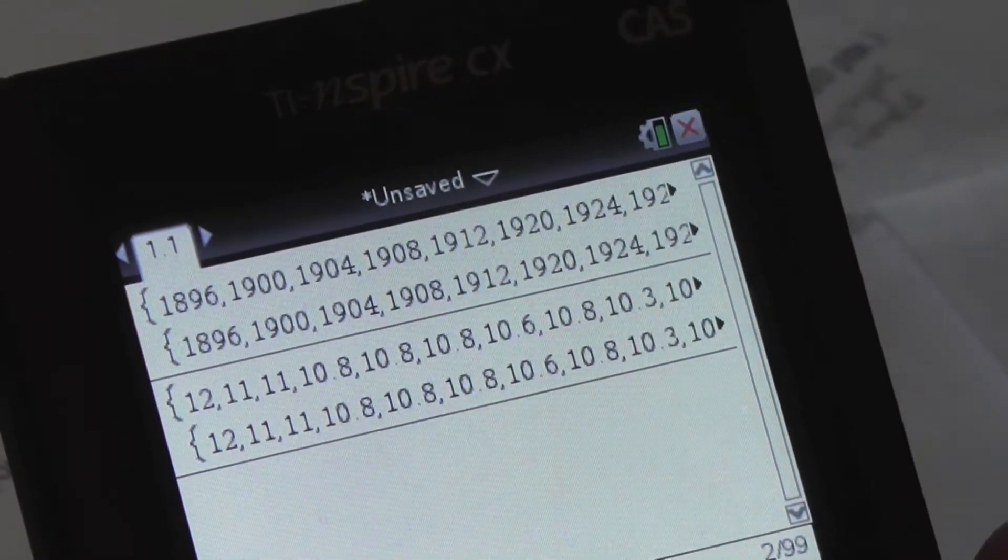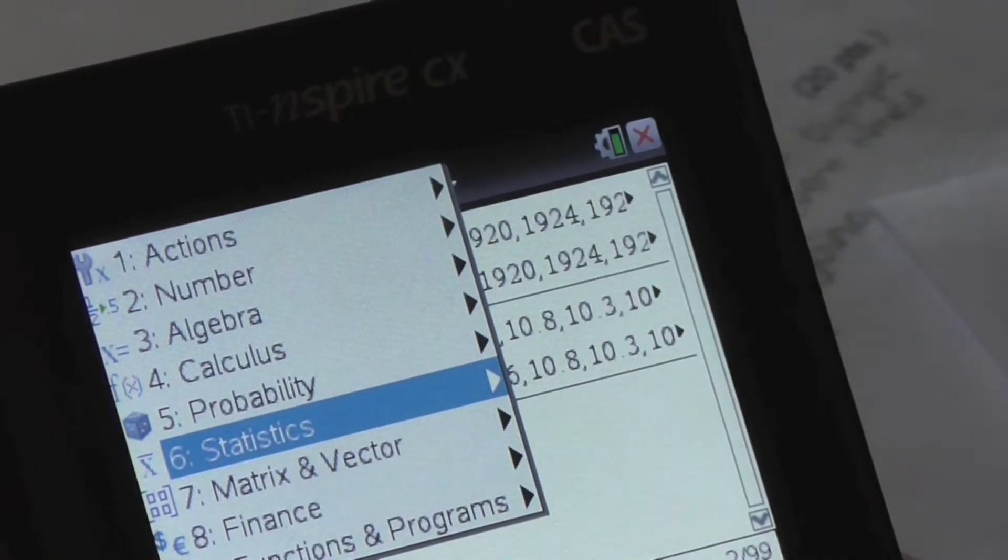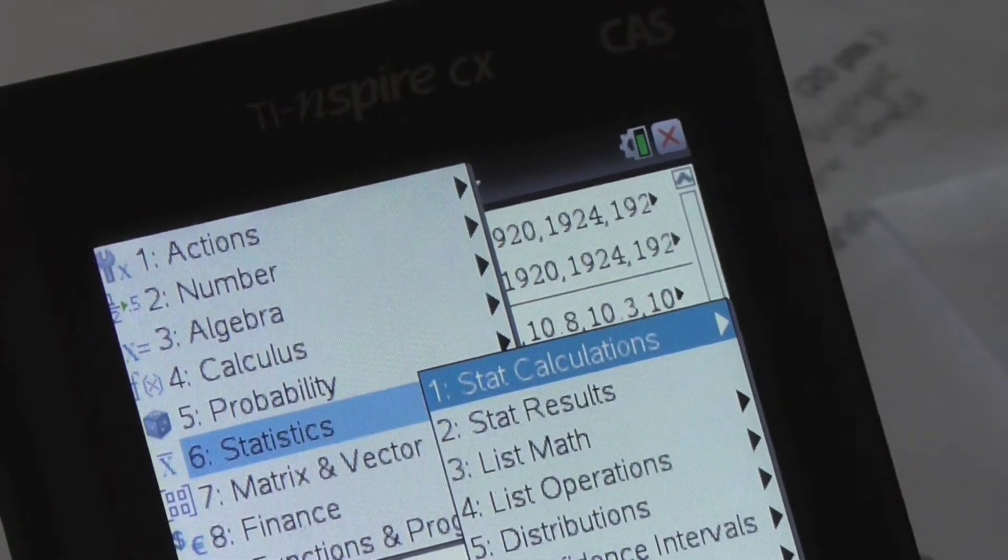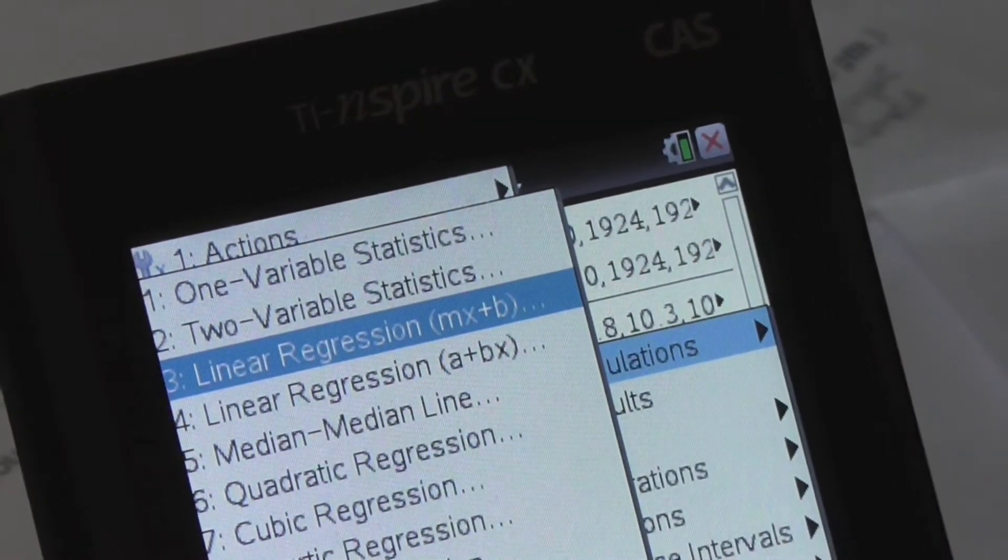Once you've done that, what you want to do is click menu, and then go down to statistics, then select stat calculations, and then select linear regression mx plus b.